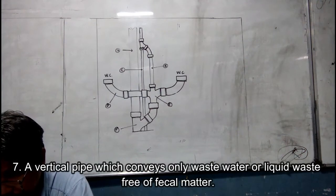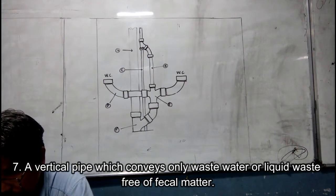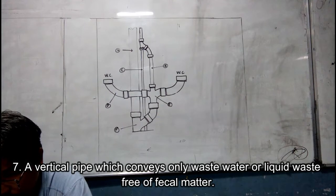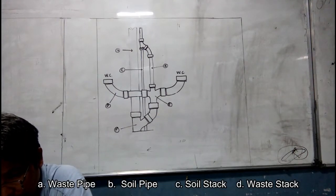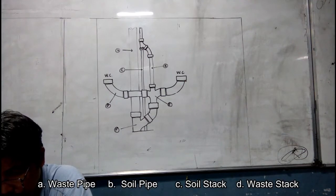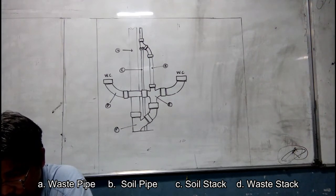Number seven. A vertical pipe which conveys only wastewater or liquid waste free of fecal matter. A. waste pipe, B. soil pipe, C. soil stack, D. waste stack.